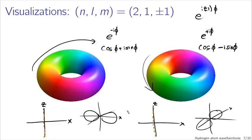So if you're seeing pictures with blobs off-axis like this, in the case where m is non-zero, you're looking at a chemist's interpretation of the spherical harmonics.